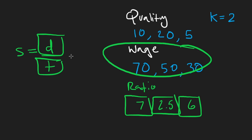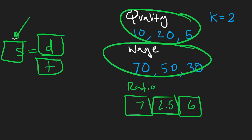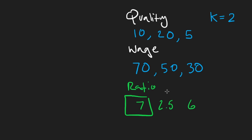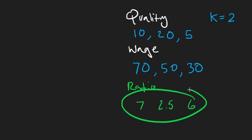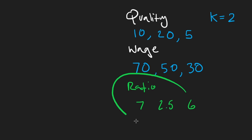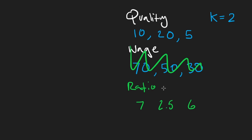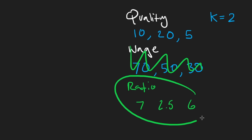Now we're going to take this and sort the quality based on this. Let's think of this as pairs — we're getting rid of the wage, and we have the ratio and the quality. We're going to sort this based on the ratio in ascending order. So we're going to have: quality 20 with ratio 2.5, then six, then seven.